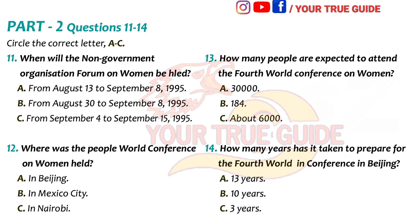There will be two meetings held in Beijing and they will overlap. One, the NGO Non-Governmental Organization Forum on Women, will be held in Beijing from August 30 to September 8, 1995. The other one, the 4th World Conference on Women, FWCW, of the United Nations, will be held in Beijing from September 4 to the 15, 1995.